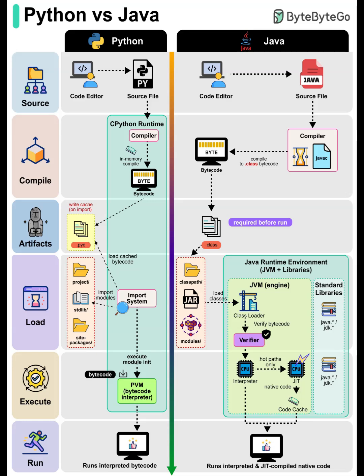So, in summary: Python — ultra-flexible, simple, always interpreted. Java — strongly typed, compiled, capable of high speed thanks to JIT. Which approach is better? It depends on your needs. Let me know in the comments if you want even deeper dives into runtime internals or language comparisons.